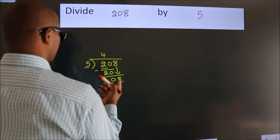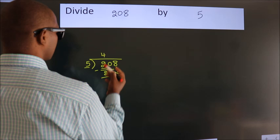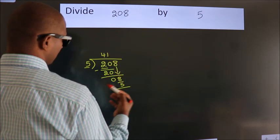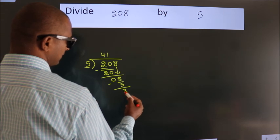A number close to 8 in 5 table is 5 once 5. Now we subtract. We get 3.